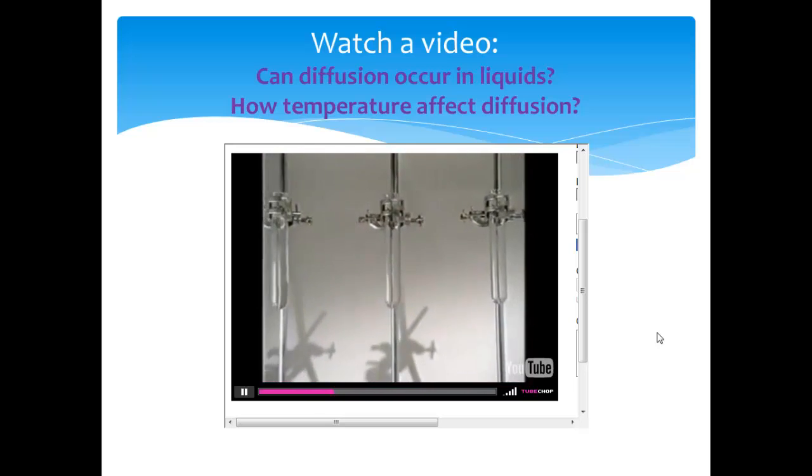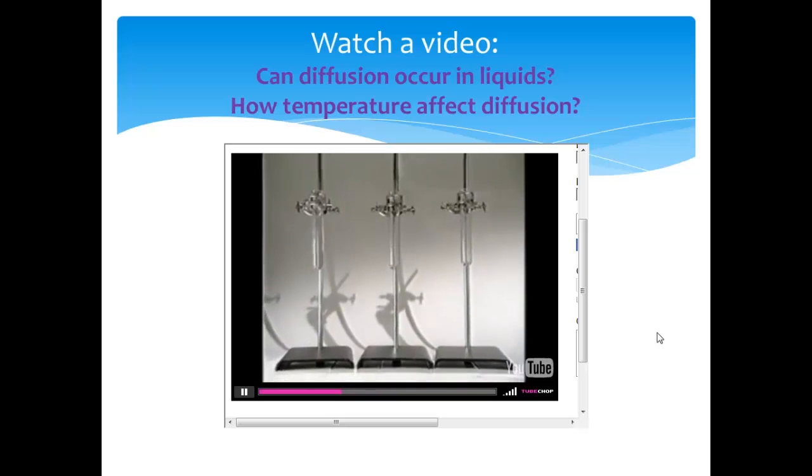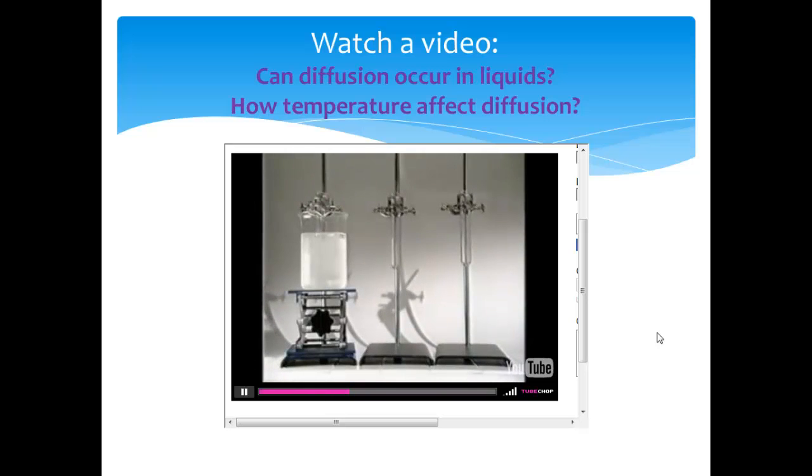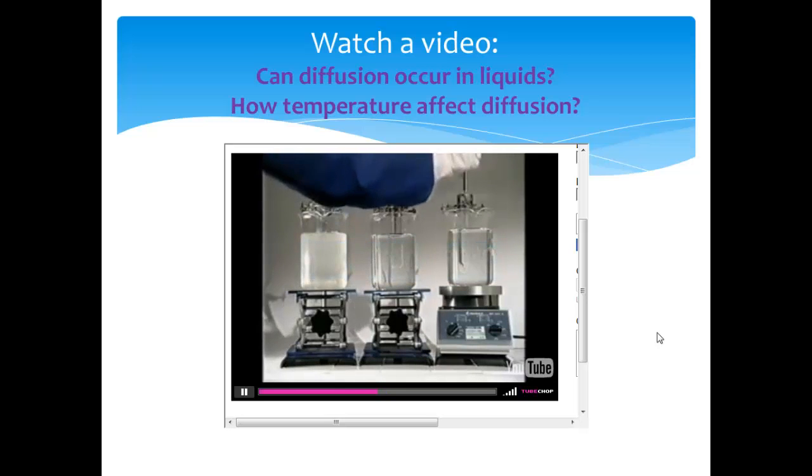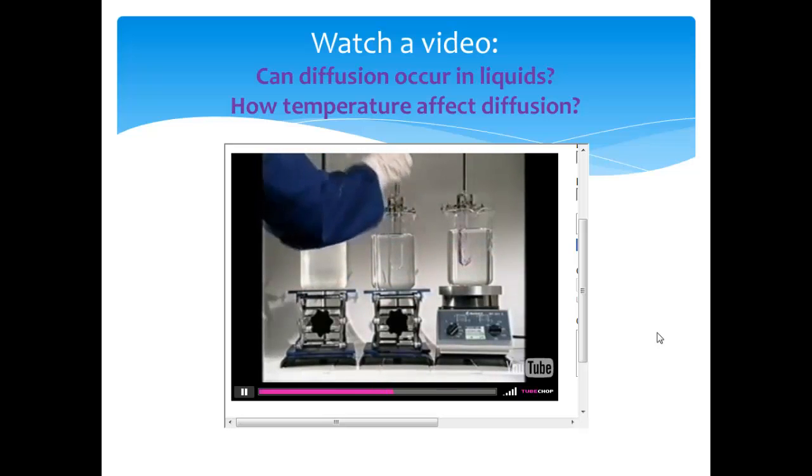These three tubes containing water are immersed in baths at different temperatures: 0, 20, and 70 degrees Celsius. A crystal of potassium permanganate is placed in each.